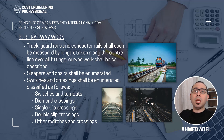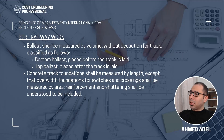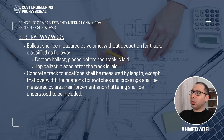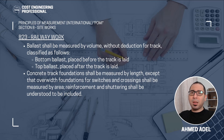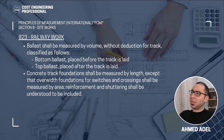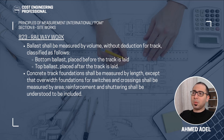Ballast shall be measured by volume without deduction for track, classified as bottom ballast and top ballast. Ballast is the aggregate or gravel you see under railways on which the tracks are laid. In the BOQ you will have two separate items, each with a separate volume.